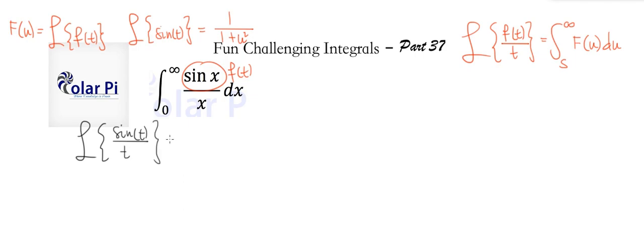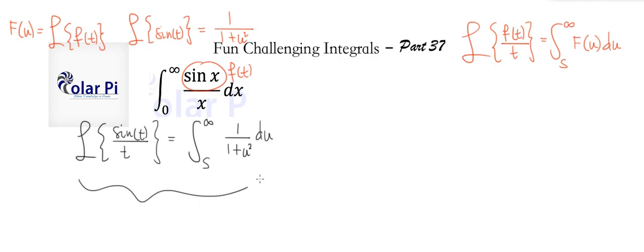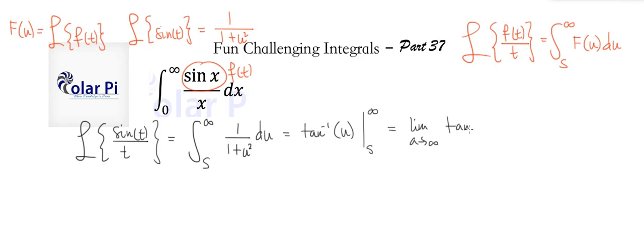So the Laplace transform for sin(t) over t is going to be the integral from s to infinity of capital F(u) du, which is 1 over 1 plus u squared du in this case. If we continue on this integral, we know that it's arctan evaluated from s to infinity. Using proper grammar on evaluating infinity, we write lim as a goes to infinity of arctan(a) minus arctan(s). This is going to be equal to capital F(s) because it's a function of s. And the limit of arctan(a) as a goes to infinity is π/2. So capital F(s) = π/2 minus arctan(s).